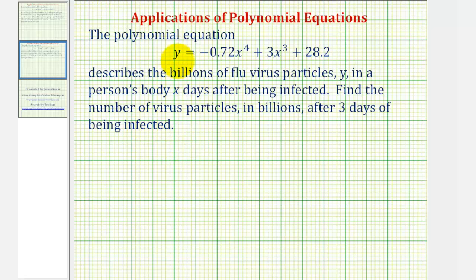So we want to find the value of y when x, the number of days, is equal to three. If we substitute three for x, we would have y equals negative 0.72 times three to the fourth power, plus three times three to the third power, plus 28.2.